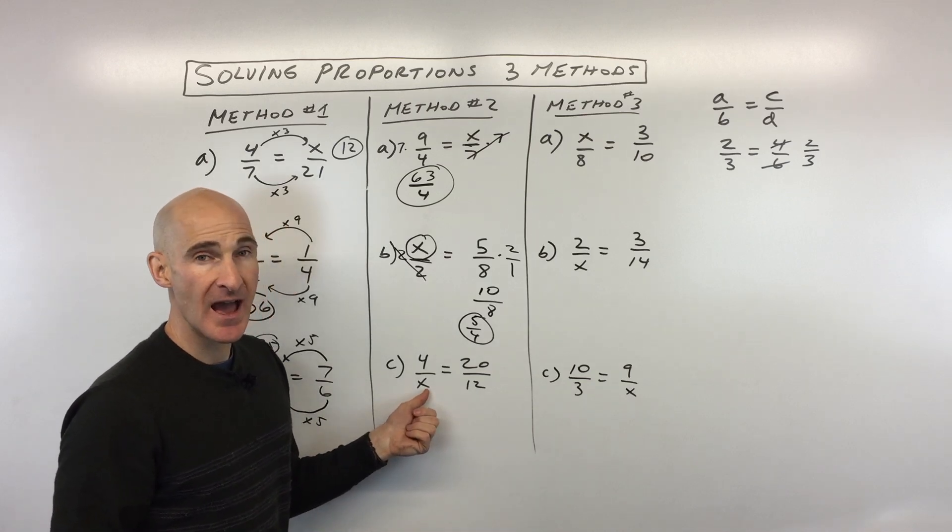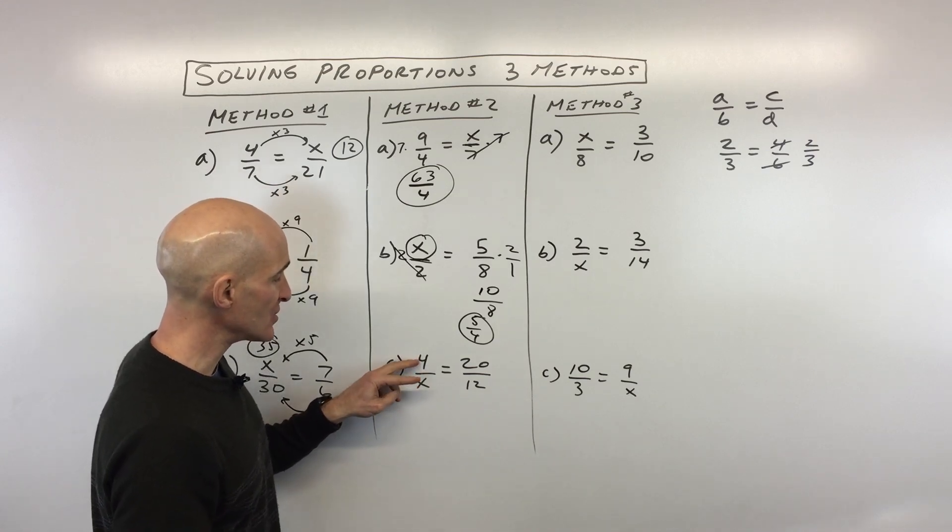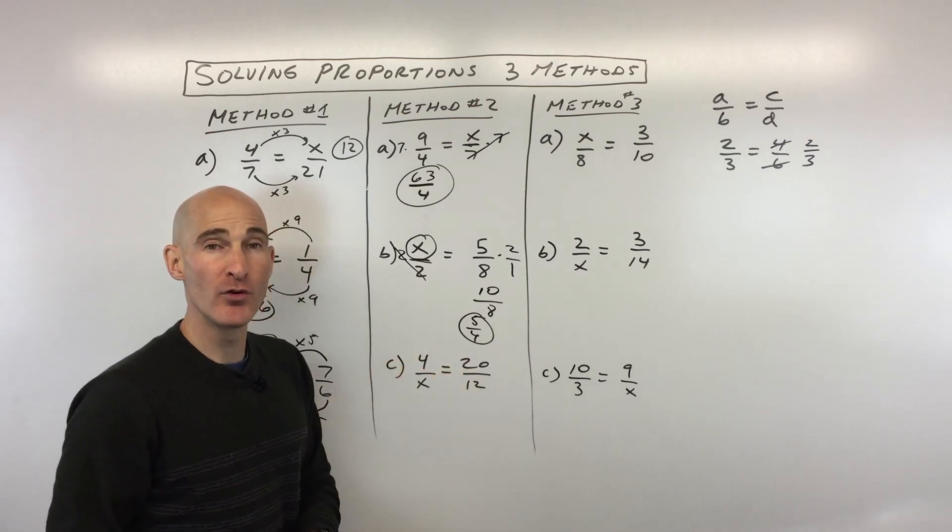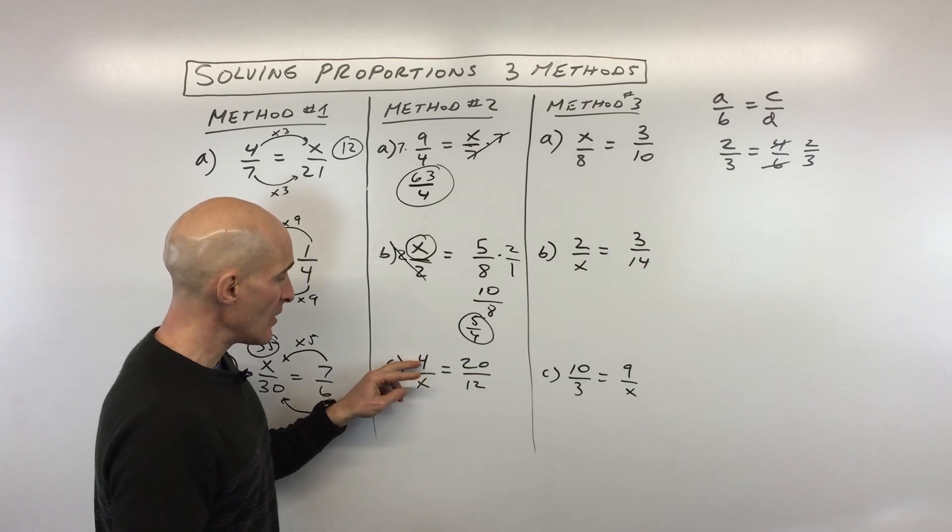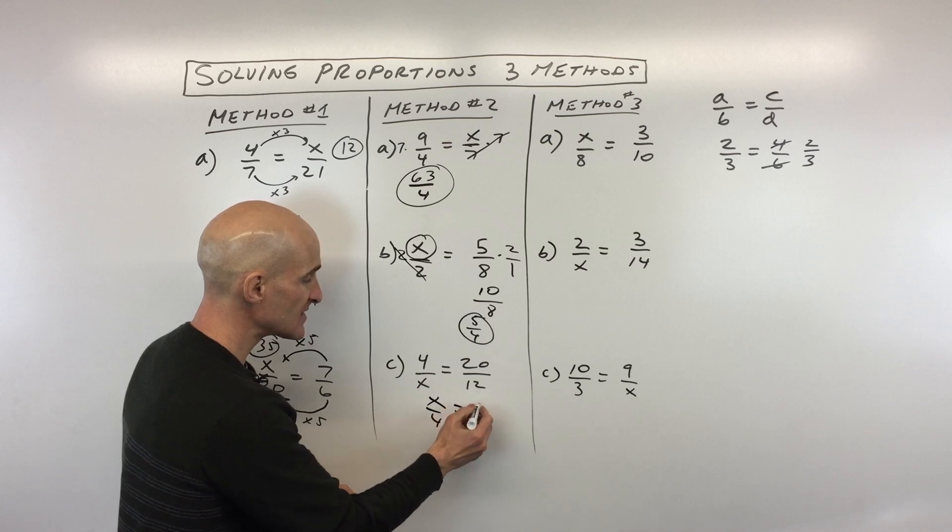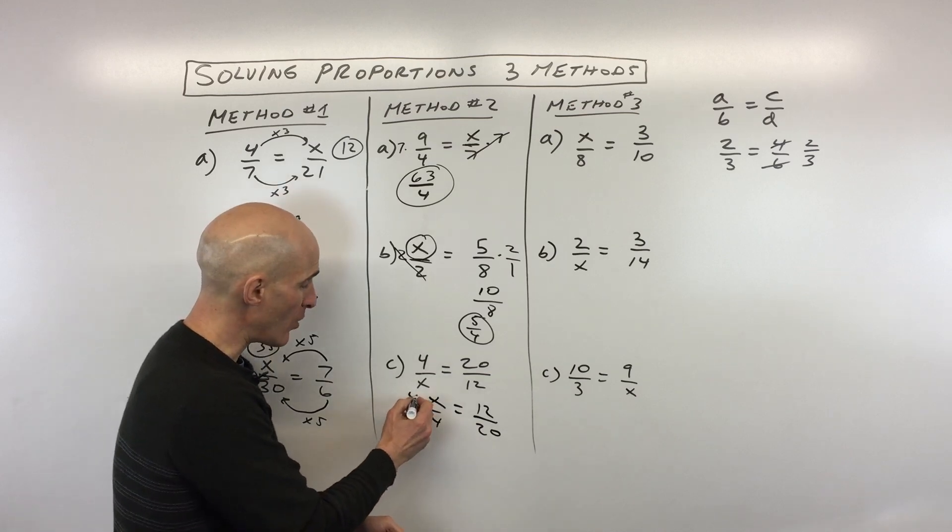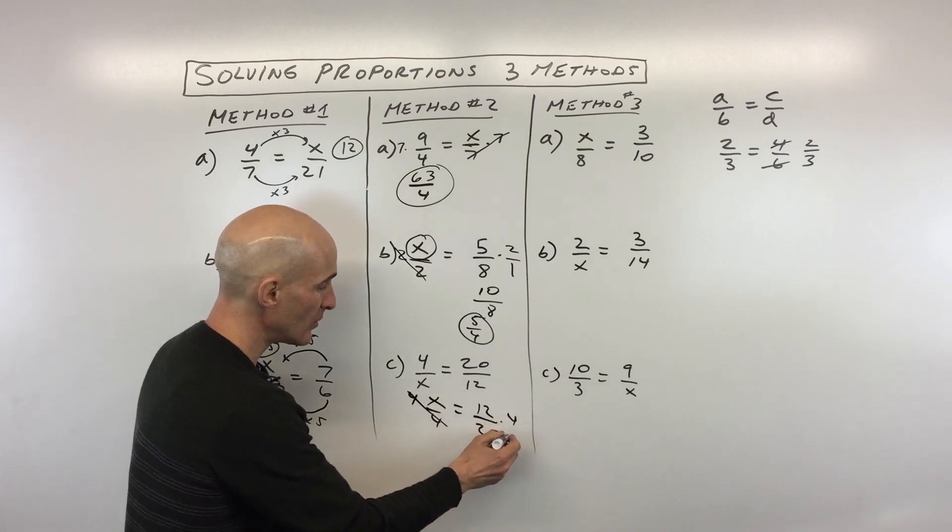And because the variable's in the denominator, one of the techniques or one of the properties of proportions, I should say, is that you can take the reciprocal of both sides of the equation. So if I flip this one over here on the left, and make this x over 4, that's going to be the same thing as taking the reciprocal on the right, which is 12 over 20. So now again, I'm going to do the opposite of dividing by 4, I'm going to multiply both sides by 4.